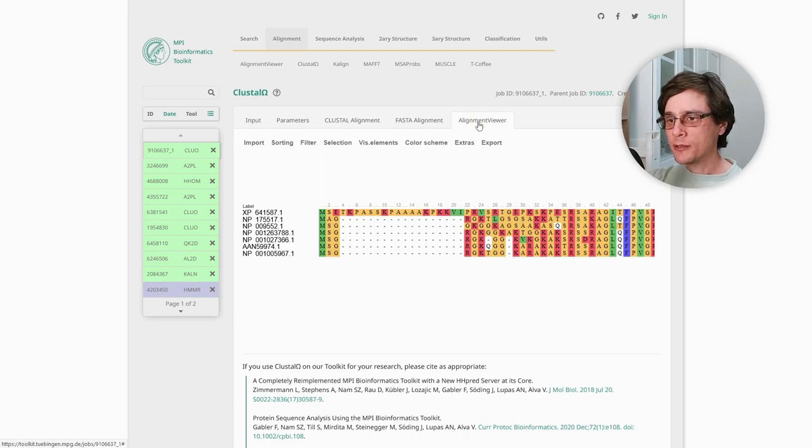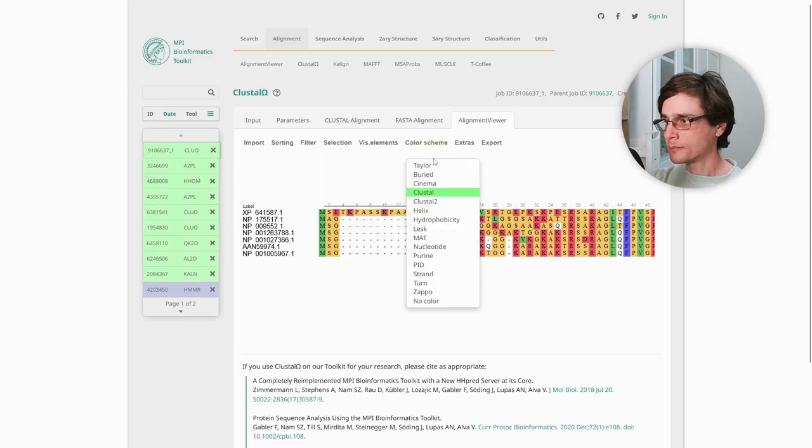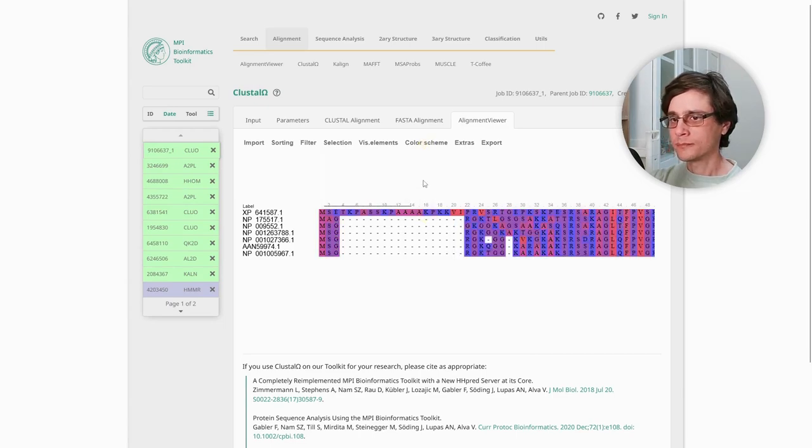The alignment viewer can be customized depending on our specific interests. For example, the coloring scheme can be changed. The results can be downloaded or forwarded to another program.